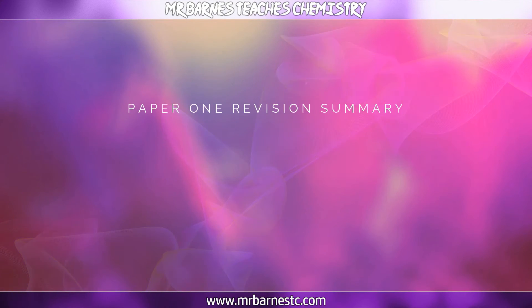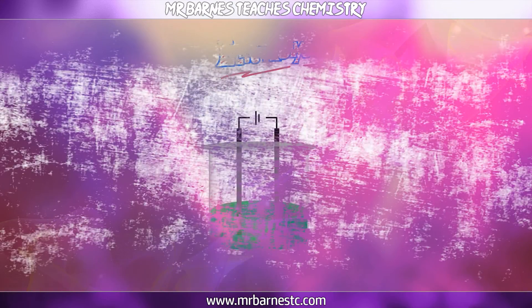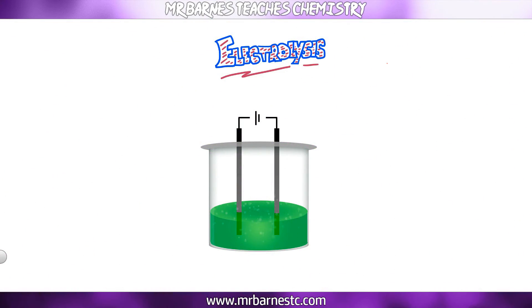Now you know what electrolysis is, you need to know what happens to the ions during electrolysis. You need to know the names of the two electrodes. The way I always say to remember that is remember the phrase PANIC: Positive Anode, Negative is Cathode.